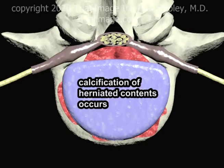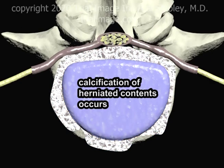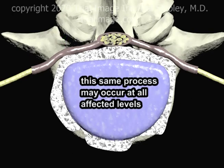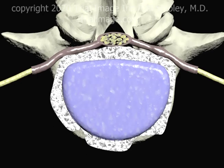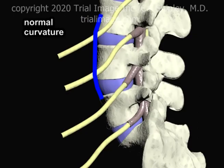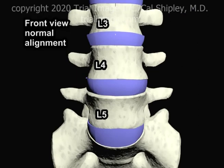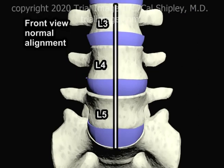Over time, the herniated contents may calcify, and the process of calcification may expand, compressing the spinal nerve roots. This same process may occur at all levels affected by the degenerative disc disease. Multi-level degenerative disc disease may also cause alterations in the normal curvature of the spine, as demonstrated here. Alignment of the spinal vertebrae may also be affected, as shown here.